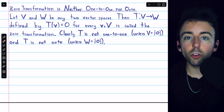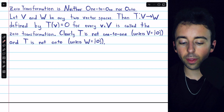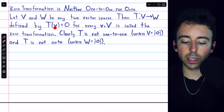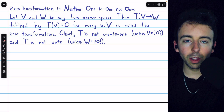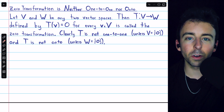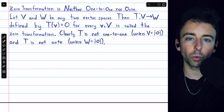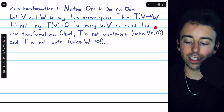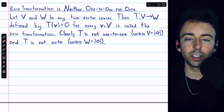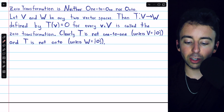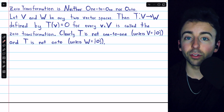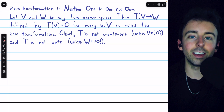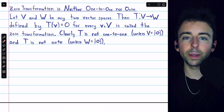The zero transformation, generally speaking, is neither one-to-one nor onto. If V and W are any two vector spaces, the transformation which maps every vector from the domain to the zero vector of the codomain is not one-to-one, because every vector maps to the same vector — except in the case where V is the zero space, in which case it would be one-to-one. Similarly, the zero transformation is not onto unless the codomain is the zero space, because otherwise the only vector being hit is the zero vector.